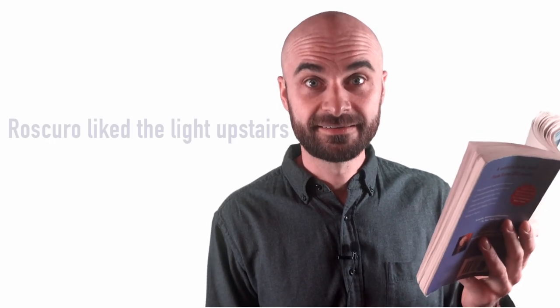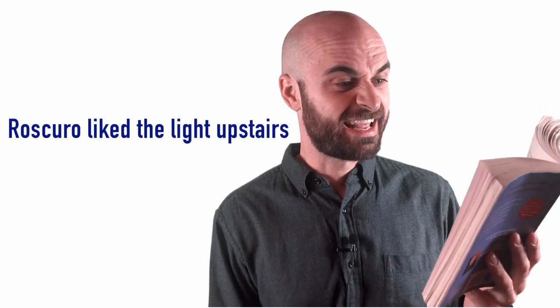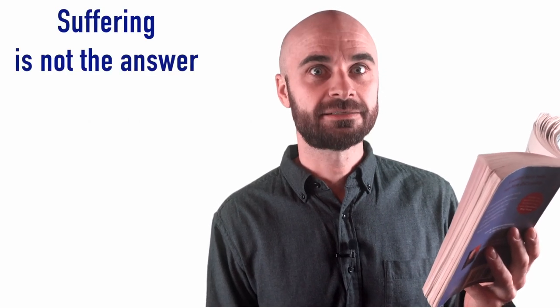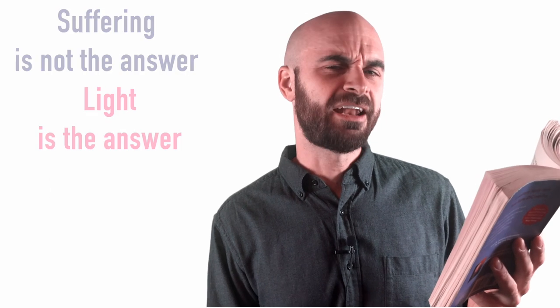So, was Roscuro having a good time upstairs? Yeah. What about upstairs did he like? The light. Yeah. It's said that he wanted to tell Botticelli that suffering wasn't the answer. Light is the answer. How do you think the people are going to react when they see a rat is joining the party?